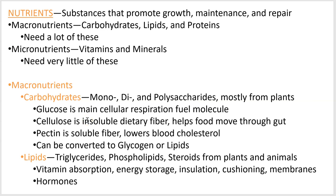So macronutrients — carbs first. You may be familiar with this from ANP1, but you have monosaccharides, disaccharides, and polysaccharides, so they're varying degrees of complexity. Glucose is a monosaccharide and it's your main molecule that we use when we want to synthesize ATP — when we want to use a food molecule for energy.